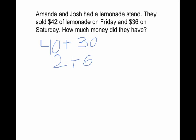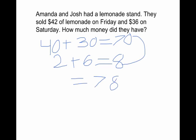Then I put an equal sign right here. I like to start with the ones because it's easier for me if I ever have to regroup. 2 plus 6 equals 8, and 40 plus 30 equals 70. And if I put 70 and 8 together, it equals 78. They had 78 dollars.